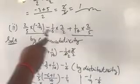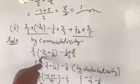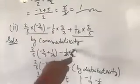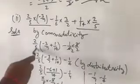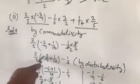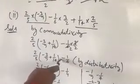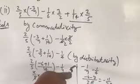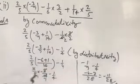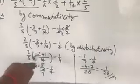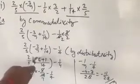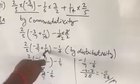2 upon 5 — this number and this number is common — so: minus 3 upon 7 plus 1 upon 14, minus 1 upon 6 into 3 upon 2. Now 3 into 2 is 6, so 2 upon 5 is common giving minus 3 upon 7 plus 1 upon 14 minus 1 upon 4. Again using distributivity property, taking LCM as 14: 7 goes into 14 twice, 3 into 2 is 6, so minus 6 plus 1 upon 14.